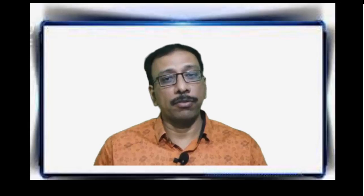The next place of articulation is dental, which is a combination of the tip of the tongue and the upper teeth. In this case, sounds like /θ/ (as in 'thin') and /ð/ (as in 'the') are produced. It is commonly observed that people who have lost their teeth due to old age are unable to produce clarity in sounds like /θ/ and /ð/ — the same applies to children without teeth.